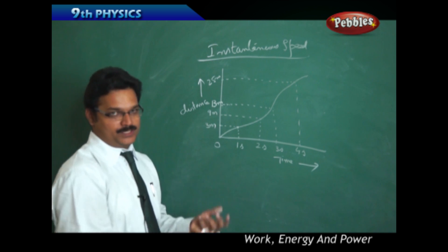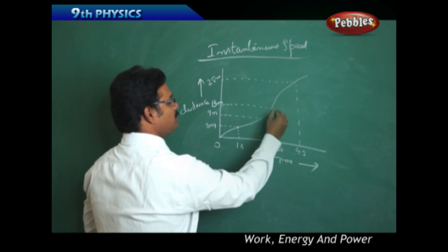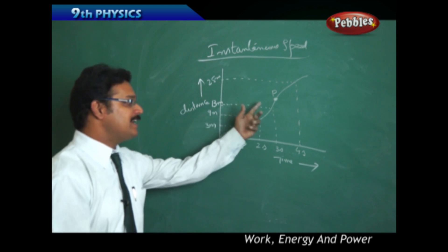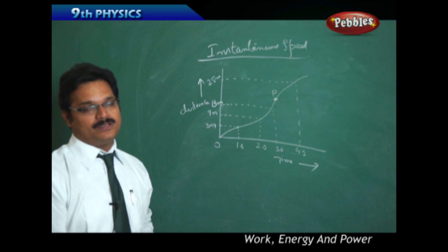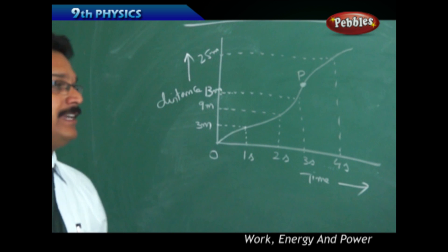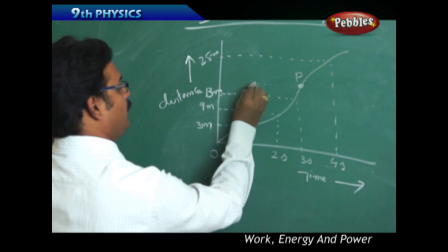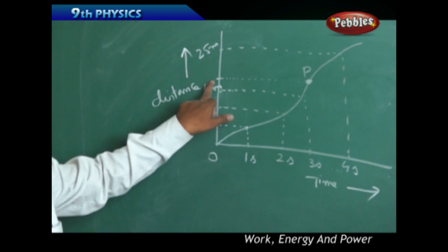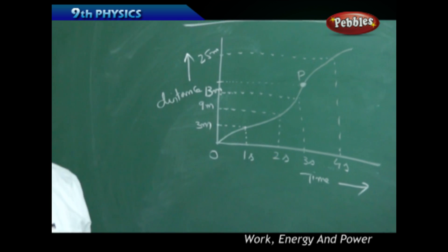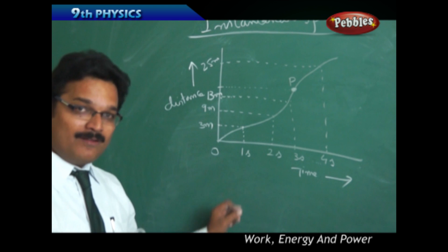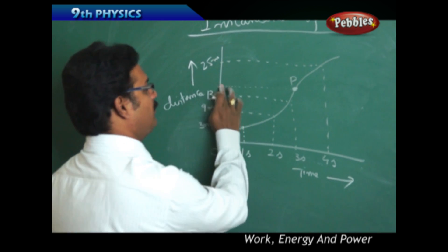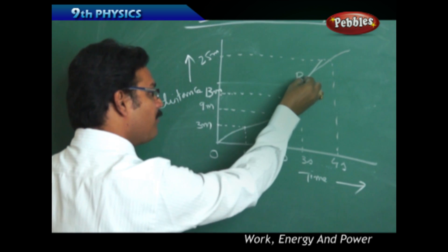Now the question is: what is the instantaneous speed at point B on this graph? We know that speed is distance divided by time, so you might think — why not take the corresponding distance and time at that point and divide them? But that approach is wrong.